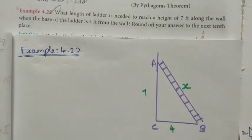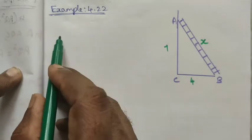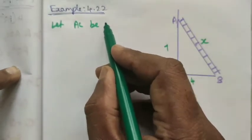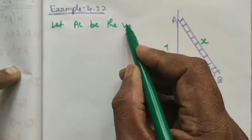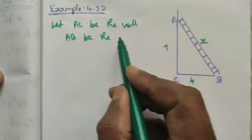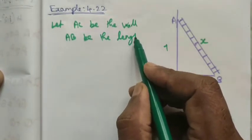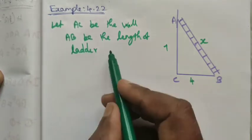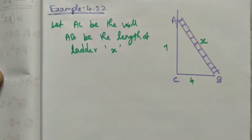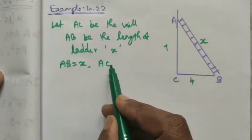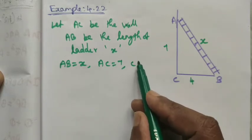We want to find the length of the ladder. Let AC be the wall, AB be the length of the ladder. Let me take it as x, that is AB equals x.